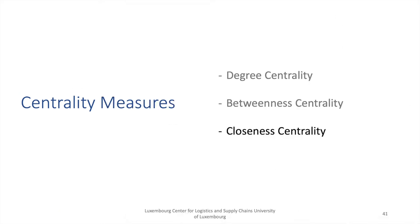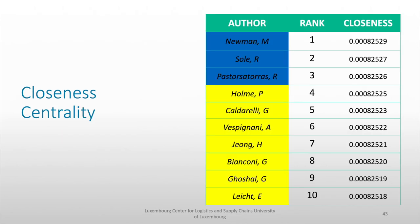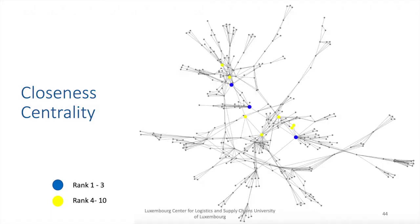Lastly, we have closeness centrality. Closeness centrality measures independence — the capacity to reach other authors directly without relying on intermediaries. It measures how long it will take information to spread from a given vertex to others in the network. High closeness rates the author as most responsible for spreading information frequently to other researchers. Computing closeness centrality, Newman is again our top-ranking author, followed by Sole and then Pastor Satoras. Rank one to three are shown in blue and ranks four to ten in yellow in our graph.